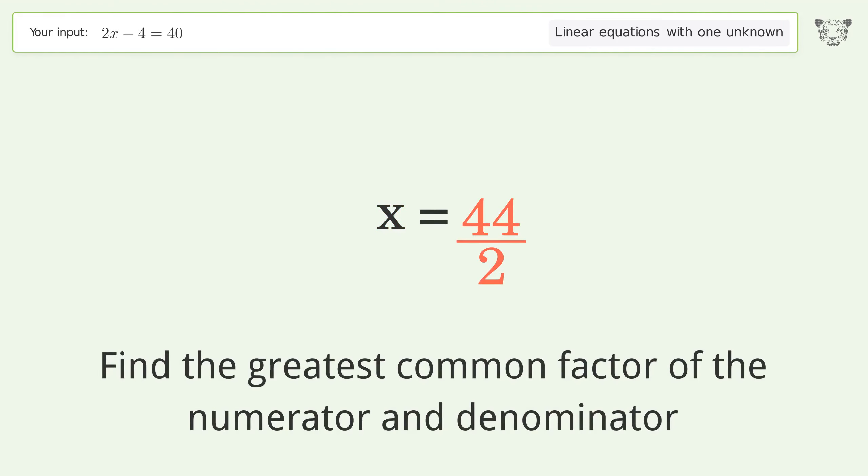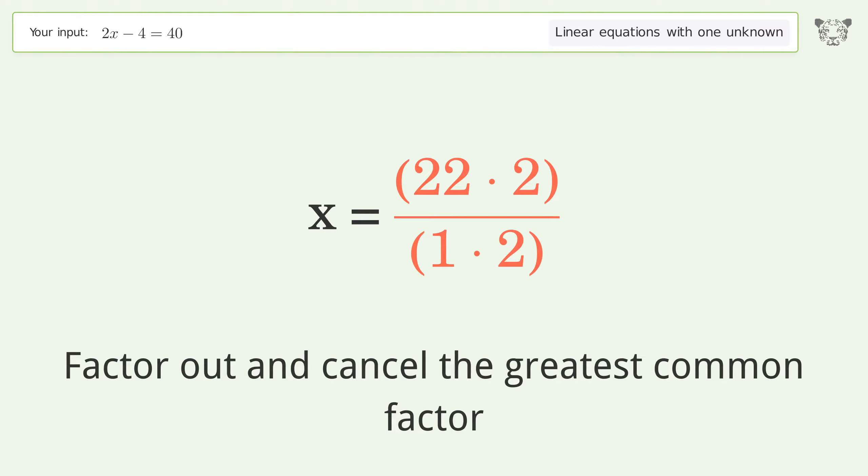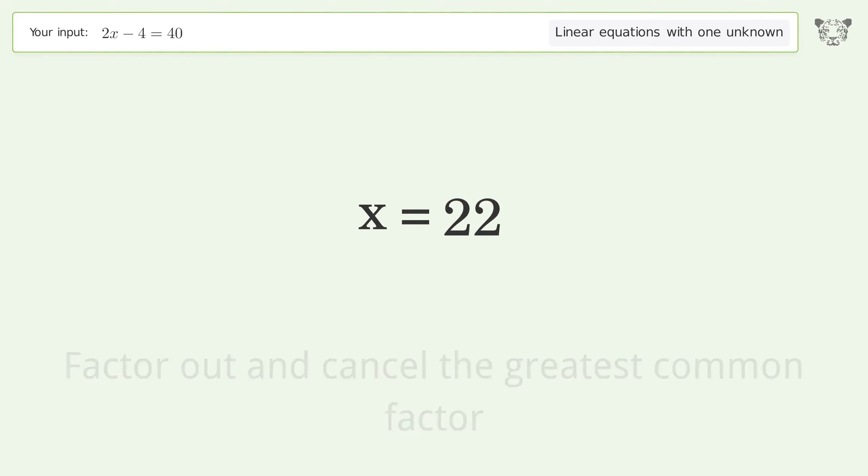Find the greatest common factor of the numerator and denominator. Factor out and cancel the greatest common factor. And so the final result is x equals 22.